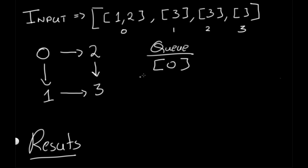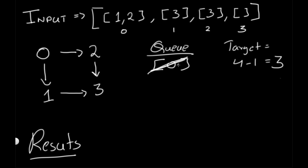Each iteration, we pop out an element and check if its last element equals our target. Our target is the length of the input minus 1, which is 4 minus 1 equals 3. We pop out [0] — is 0 equal to 3? No. So we look for 0's neighbors. One neighbor is 1, so we add [0, 1] to the queue. Node 0 also connects to 2, so we add [0, 2] to the queue as well.